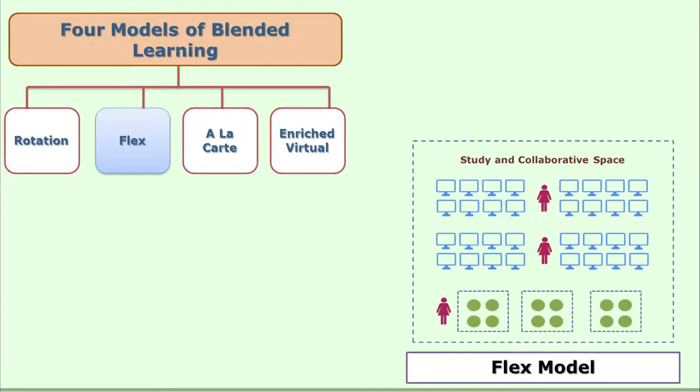From rotation, we move to the flex model — the second type of blended learning. In the flex model, students and teachers interact through online mode but within a brick-and-mortar institution. Interactions may be large group or small group, all conducted online. The teacher can see the products of discussions or work submitted online and comment on them. The flex model has the advantage of maximizing teacher time for every student individually, making it one of the popular models of blended learning.